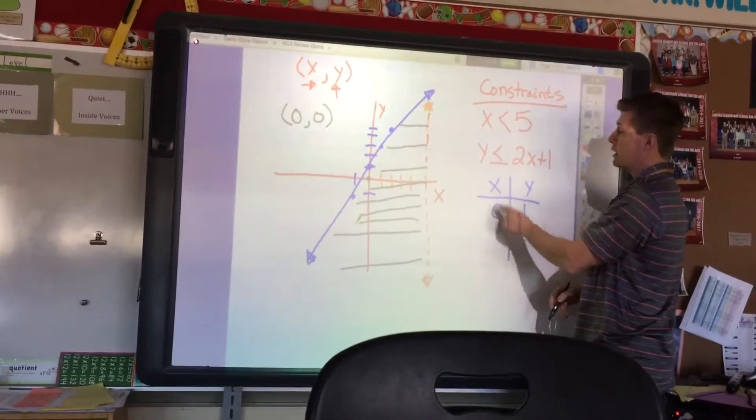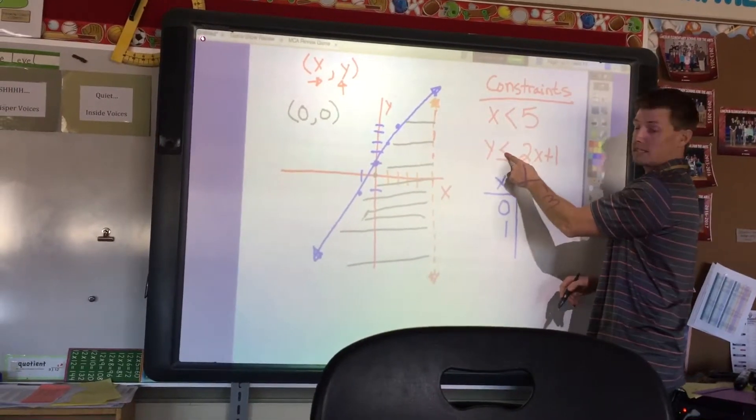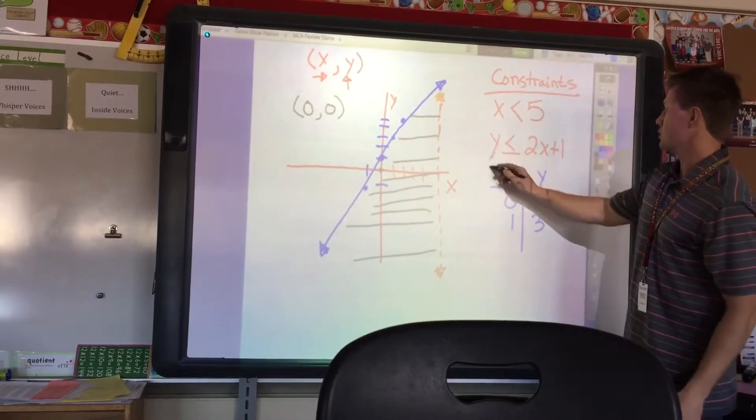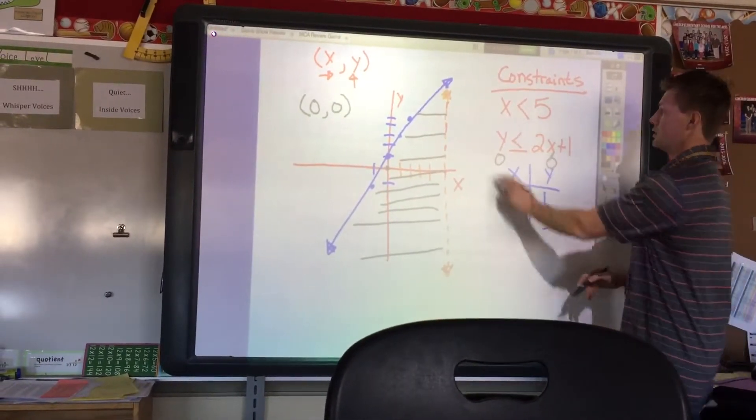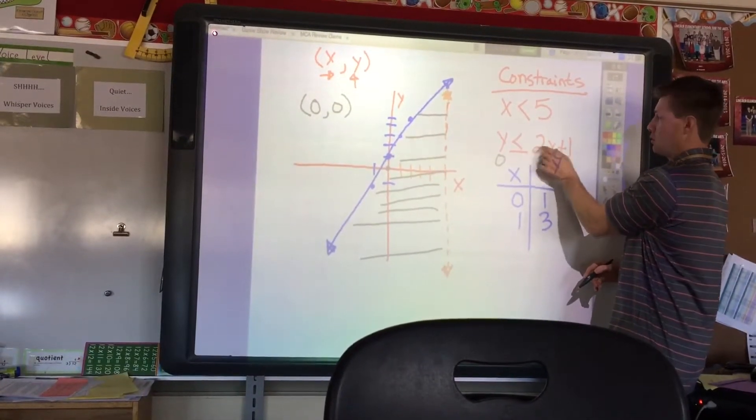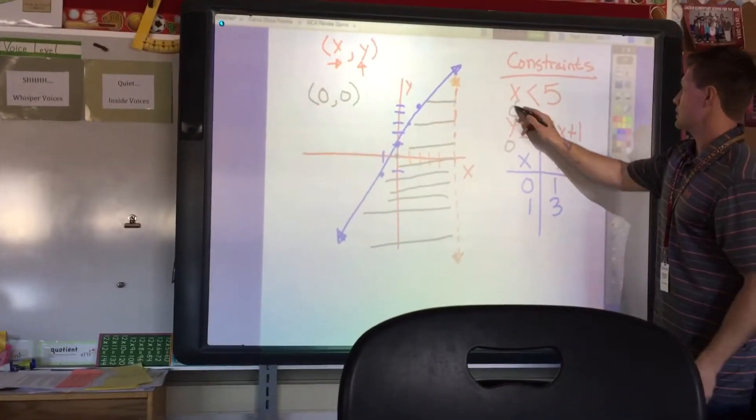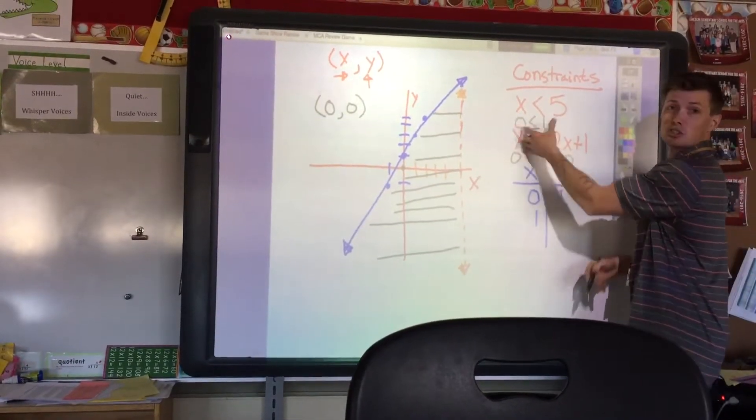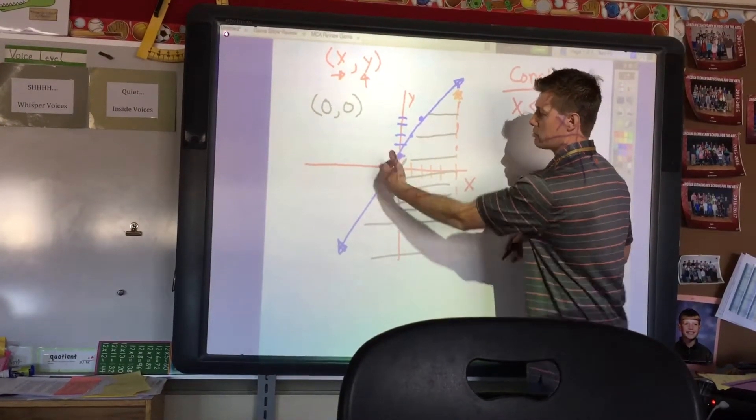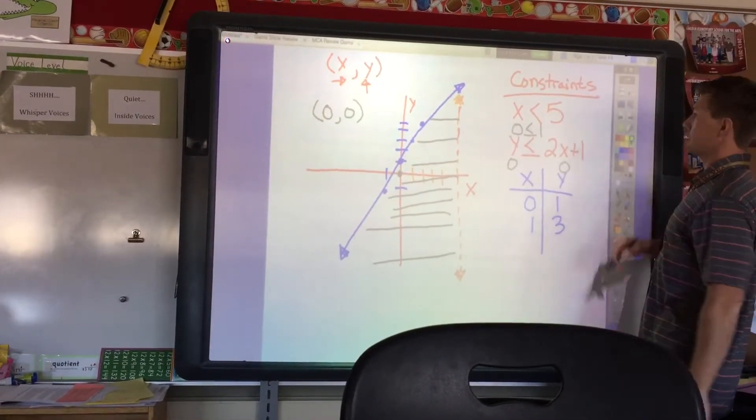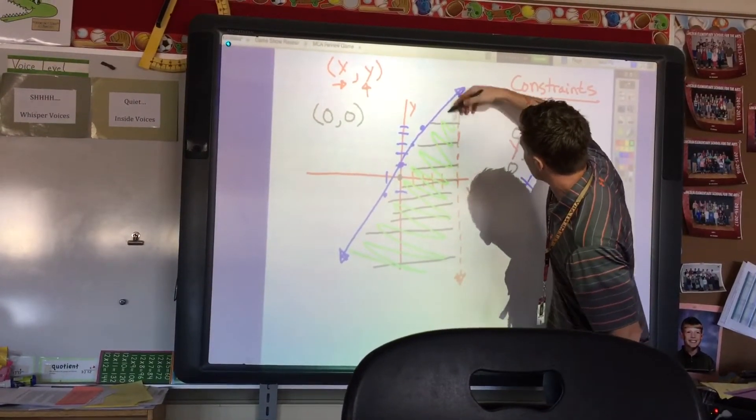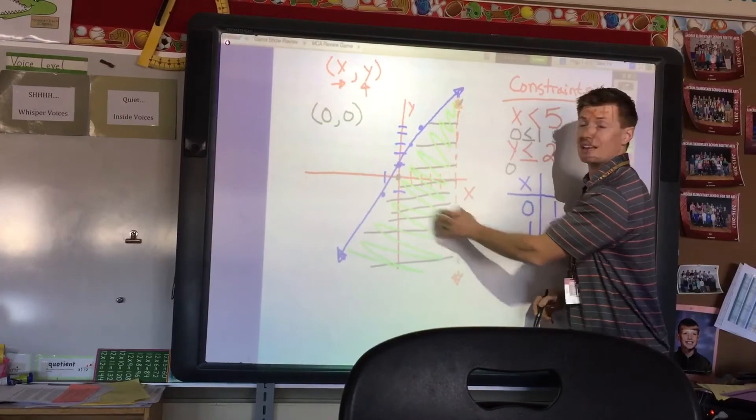Then, I'm going to test if y is less than or equal to 2x plus 1. I plug in 0, plug in 0. y is 0. x is 0. Is 0 less than or equal to, well, 2 times 0 is 0, plus 1. What I end up with is 0 less than or equal to 1. This is true as well. So I'm going to shade near the origin. So I'm shading that direction. And what we'll come up with, using our constraints, is this shaded area that is between these two lines.